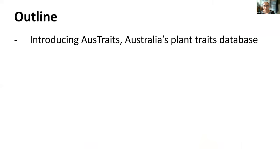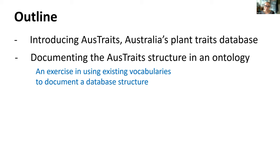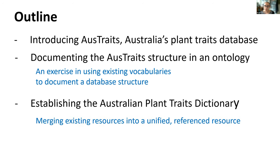Briefly, I want to introduce AusTraits — Australia's largest plant traits database. What I'm talking about today is a very specific case example, rather than a large-level domain-specific ontology. I've been working — and this is still in progress — documenting the AusTraits structure in an ontology, using existing vocabularies to document our database structure, hoping for larger impact and reuse. At the very end I'll touch upon a separate project: establishing an Australian plant traits dictionary merging many existing resources into a unified, referenced dictionary.